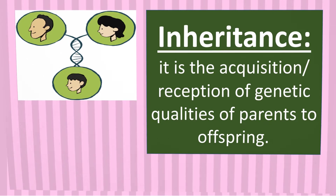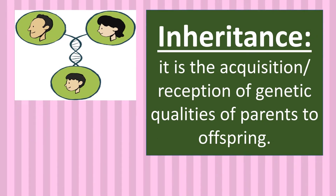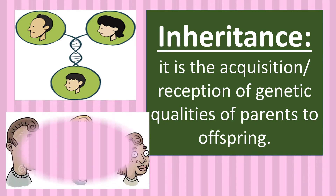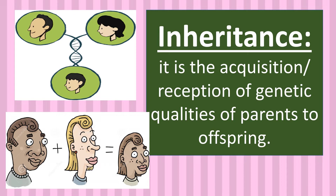Inheritance, on the other hand, is the acquisition or reception of genetic qualities of parents to offspring. In sexual reproduction, the genetic materials of two parents is combined and passed on to one individual. Although the offspring receives a combination of genetic material from the two parents, certain genes from each parent will dominate the expression of different traits. Looking back at this picture, the child inherited the characteristics of the nose, eyes, hair color, and skin complexion from her father, while she inherited the characteristics of the mother's lips, hair length, and freckles.